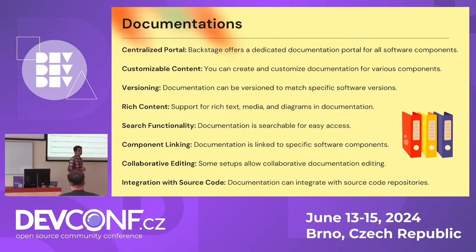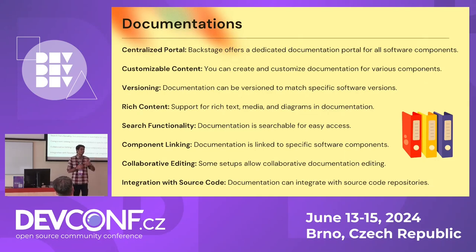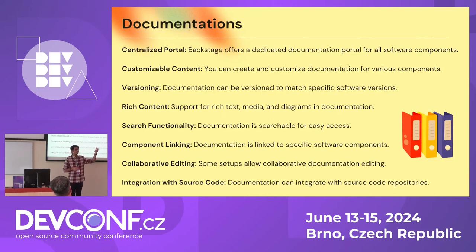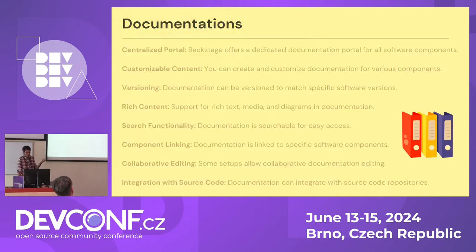For documentation, you have two options: if you have a source of truth or a link, you can directly integrate those things in Backstage, but they must be in Markdown format. You can write a converter to convert docs from a source to Markdown, or if you have tech docs in GitHub, you can directly integrate them in Backstage and show all documentation for a specific service.